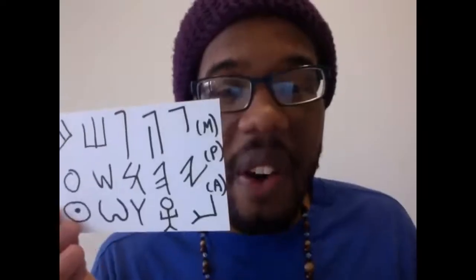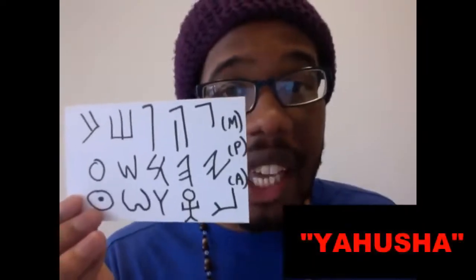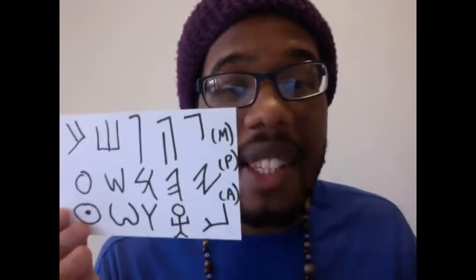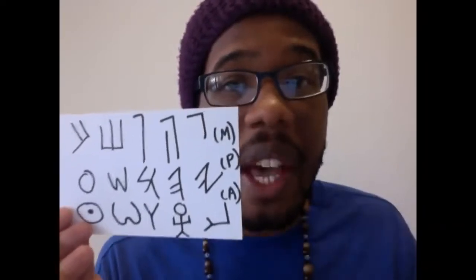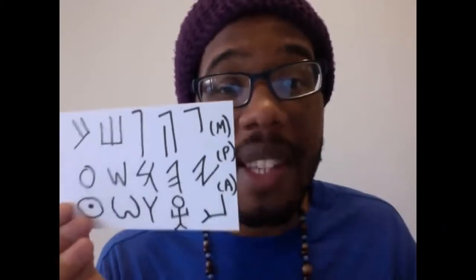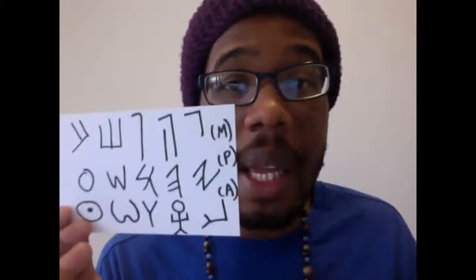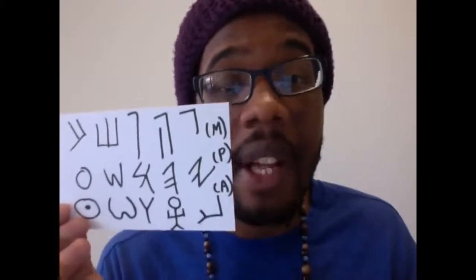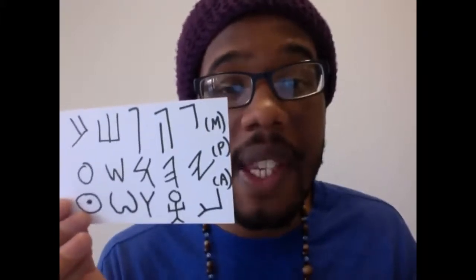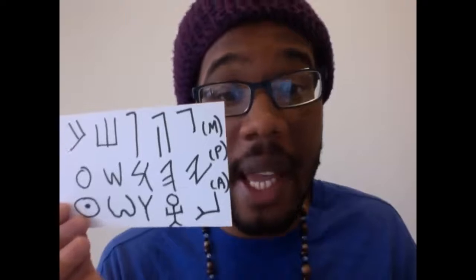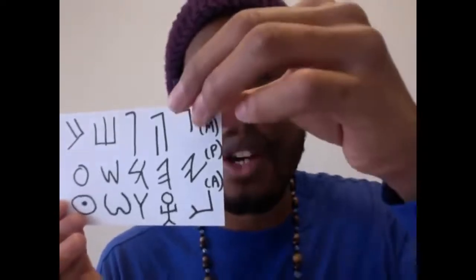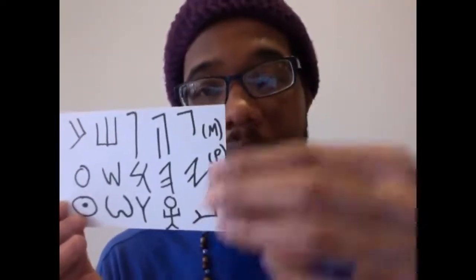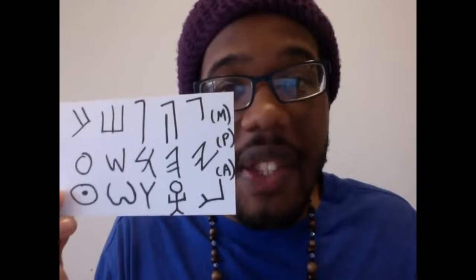Now we're going to go over the name of our Mashiach and why I use the name Yahusha. This is actually how you write his name in Hebrew — here is the modern, the Paleo, and the ancient. As you can see, the name of our Mashiach has five characters and five Hebrew letters.